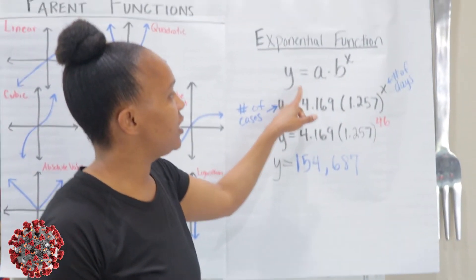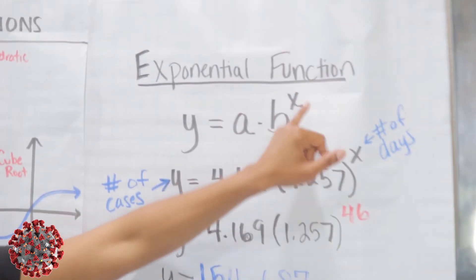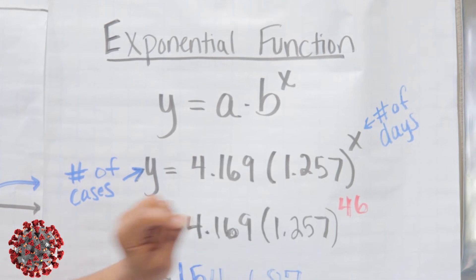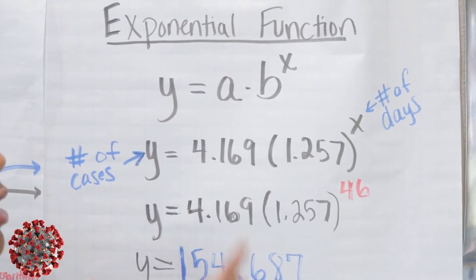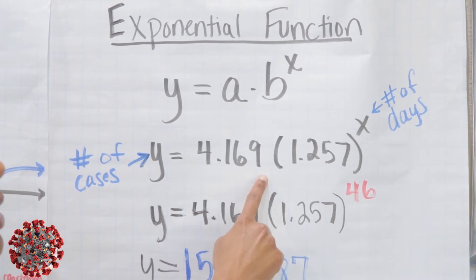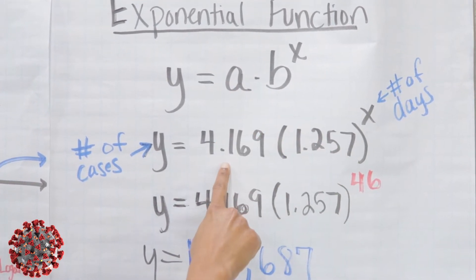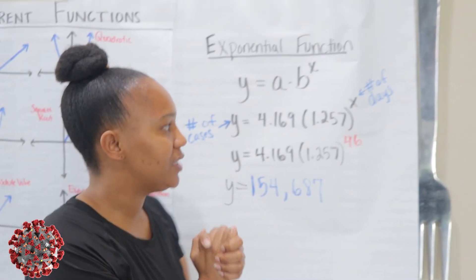So these are the numbers. a is 4.169, and b, I'm rounding it to three decimal places, b is 1.257. So this is the standard form of your exponential equation: y equals a times b to the x. Again, it's an exponential function because the variable's in the exponent. So remember the numbers that I just showed you we got from the calculator: the a was 4.169 and the b was 1.257. So all I did was replace the a with 4.169 and replace the b with 1.257.